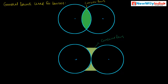For the convex lens, C1 and C2 are the centers of curvature of the two halospheres. In the same way, the concave lens also has centers of curvature C1 and C2 — these two are the centers of curvature.